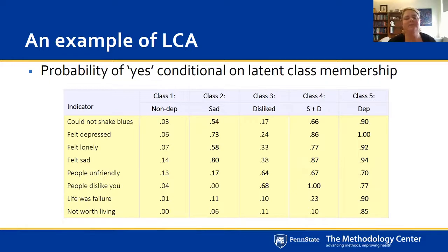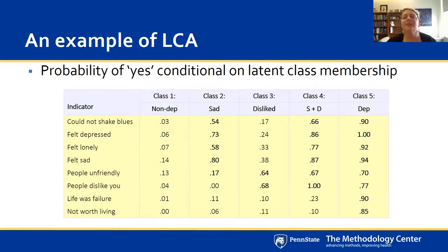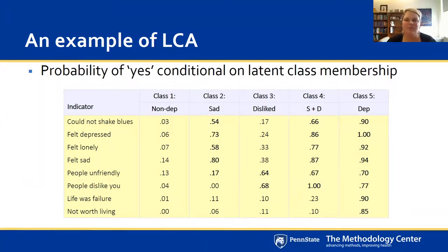Class two showed elevated probabilities for couldn't shake the blues, felt depressed, felt lonely, felt sad — but low probabilities for feeling disliked or life being a failure, so we labeled it 'sad.' Class three had elevated probabilities for feeling disliked. Class four had elevated probabilities for both sadness and disliked items. Class five, labeled depressed, brought in the dimension of feeling like life was a failure — really endorsing all criteria. As an intervention scientist, I might be particularly interested in people in classes two and three, who are subclinical, because they might require different intervention programs — cognitive reframing versus increased engagement in activities.